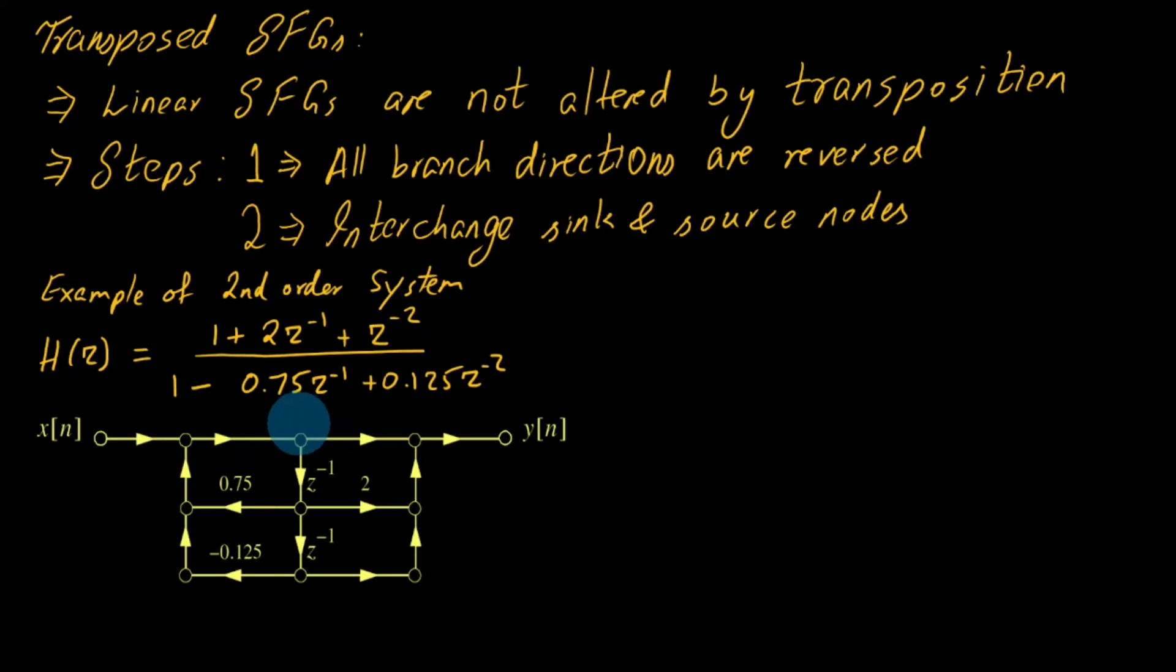We have the source node x(n) and the sink node or output y(n). The numerator, which is reflecting the zeros in the system, are expressed on the right side as b0, b1, and b2, whereas poles are represented in the denominator.